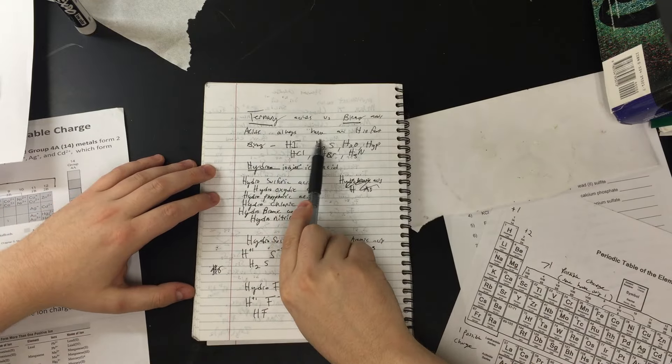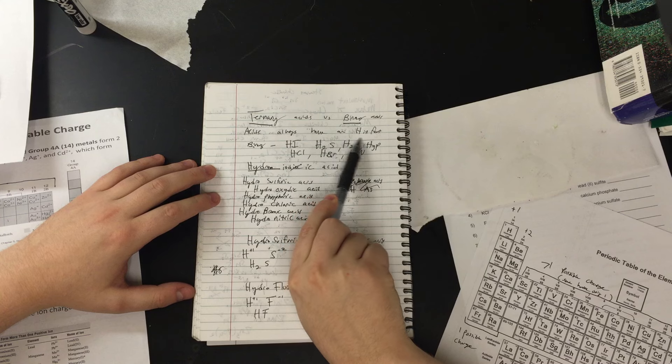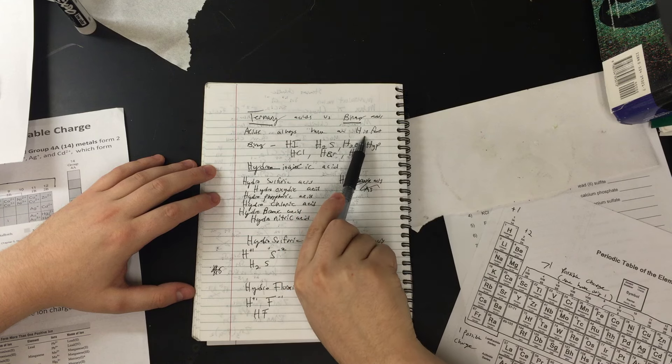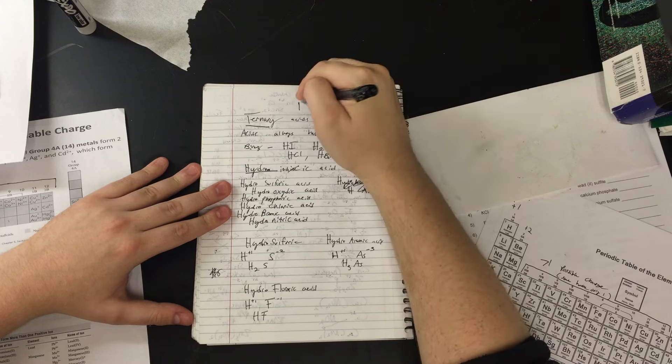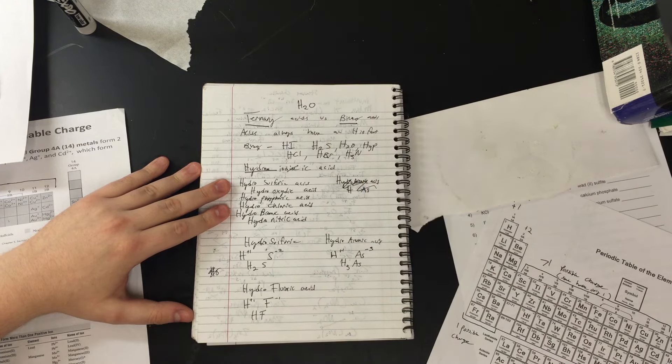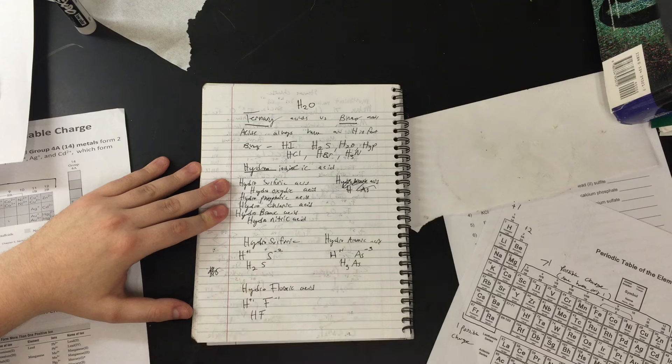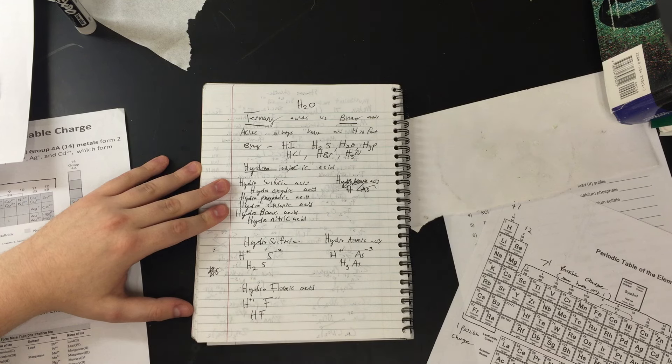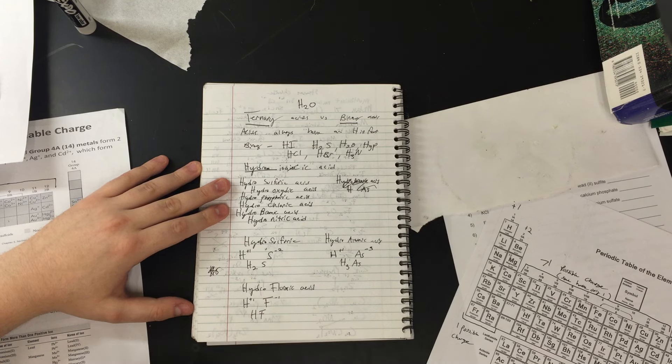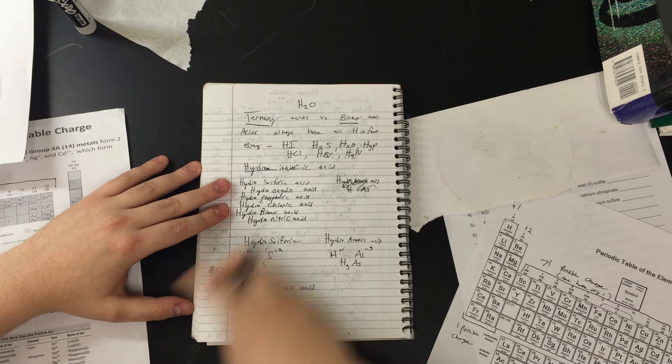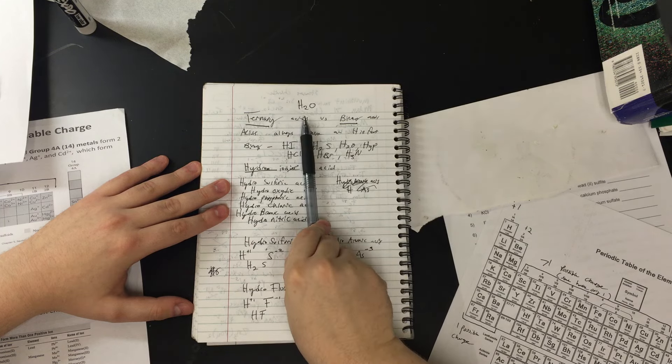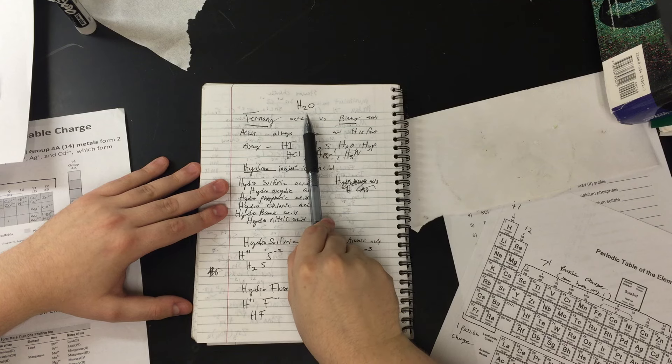Acids are always going to have an H in front. I know some of you guys get confused with that. Technically, H2O, water, is technically an acid. The definition gets a little bit more tricky, and we'll discuss that in Chapter 13. But basically, an acid is anything that donates protons - it gives away hydrogens in solution. So in order to give away Hs, it's going to need to have hydrogen in front.